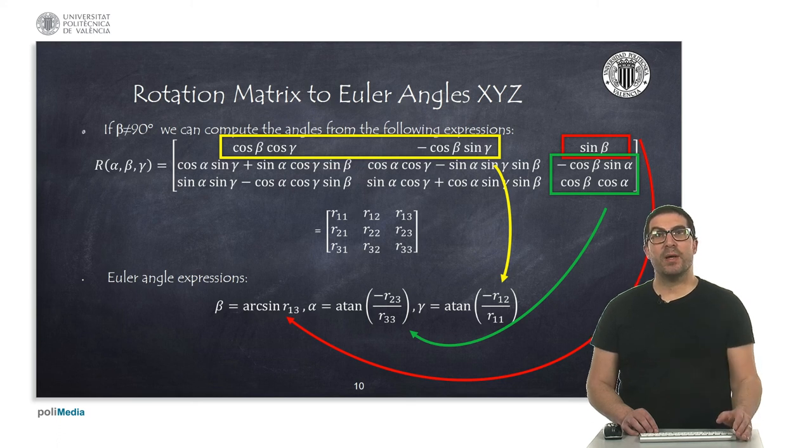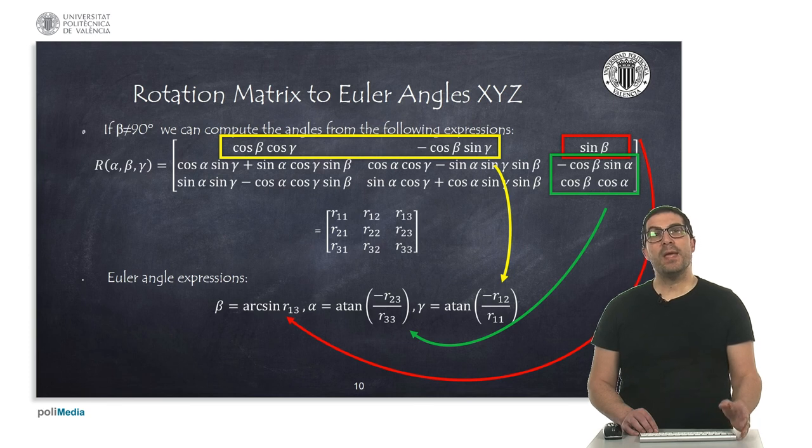it's only affected by the beta coordinate of the Euler representation. So this means that arcsine of this number is indeed this coordinate. We can get the other two coordinates from the first row and the last column.